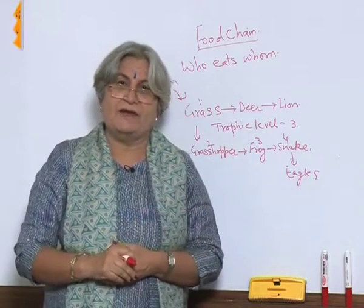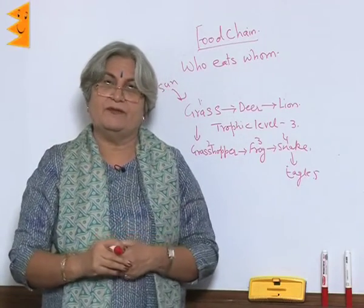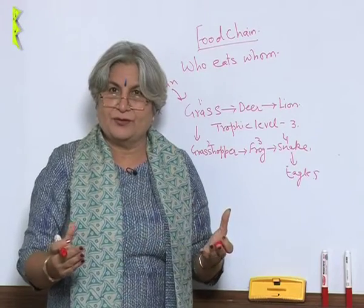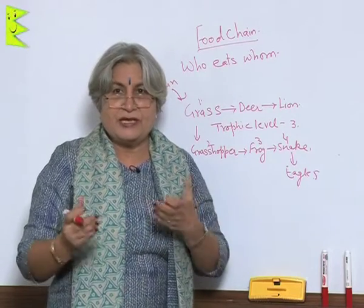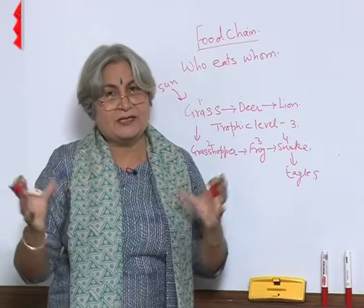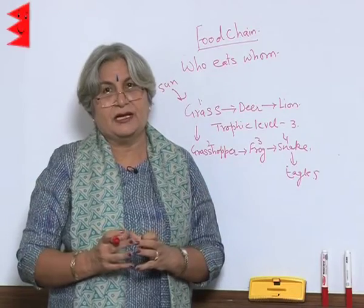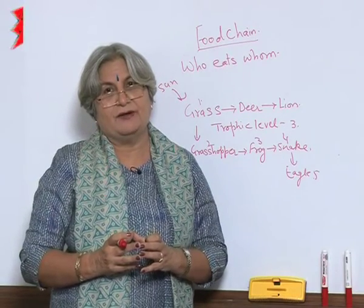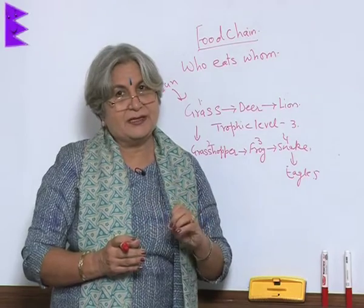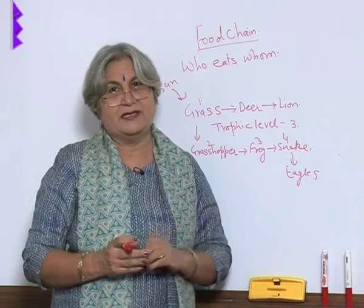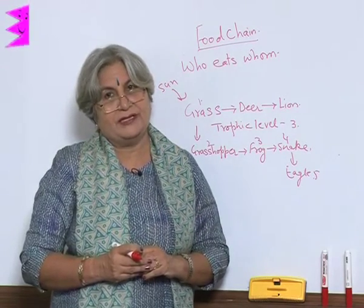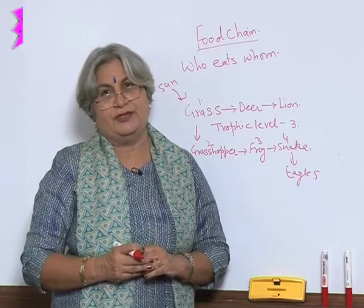Very rarely will you find more than five trophic levels. A lot of observations were made on the basis of which certain things were concluded about a food chain — and these are the points we will be discussing now regarding the flow of energy in a food chain.